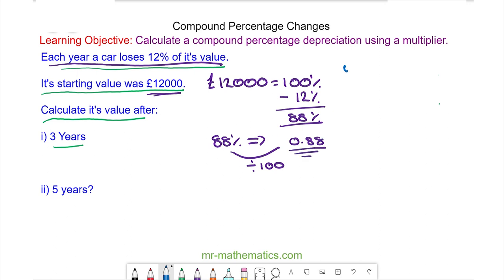So at the end of year one we have our multiplier of 0.88 multiplied by the original value of £12,000 and this is £10,560.